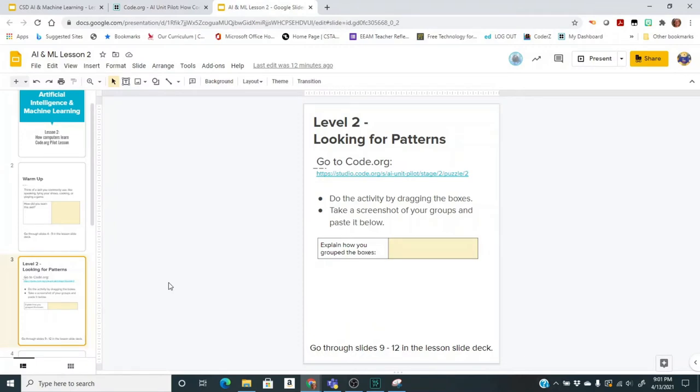We're going to this slide of your document. You're going to do the activity and explain how you group the boxes and then do a screenshot and put it down here below the table that shows how you grouped the different boxes.